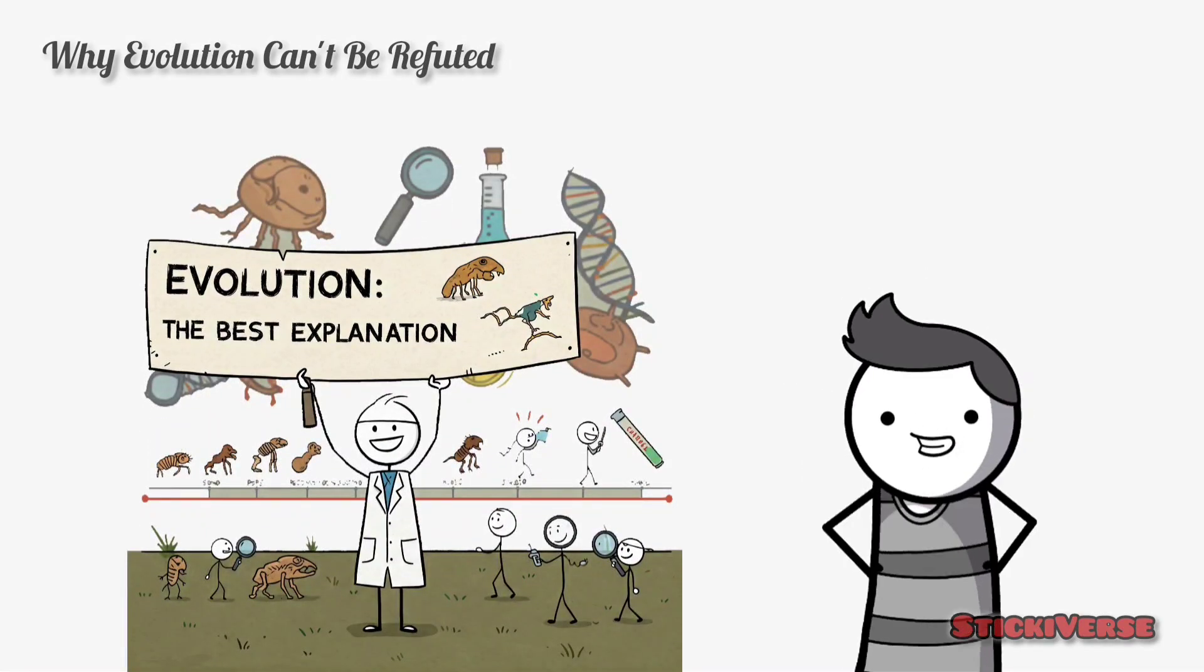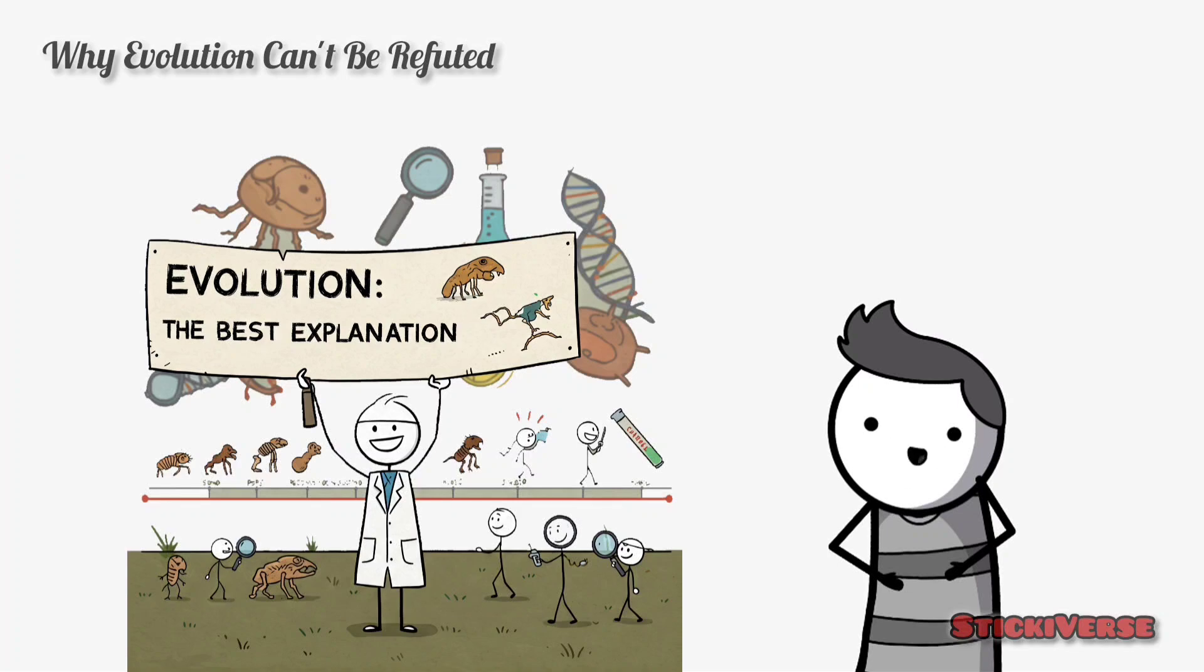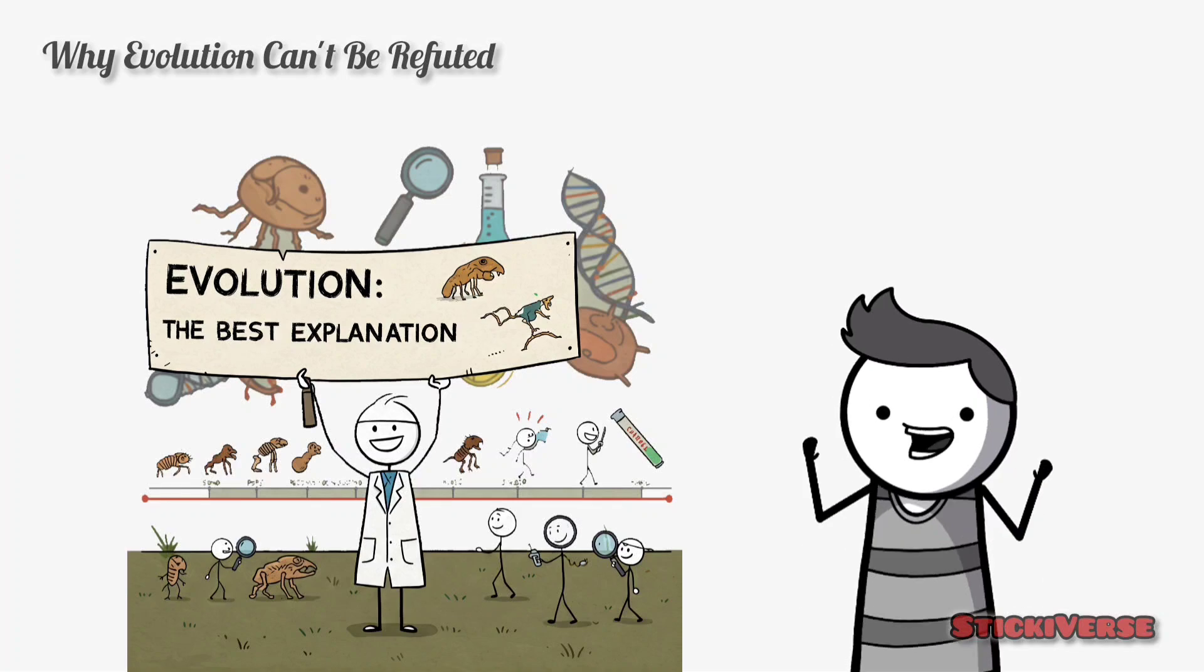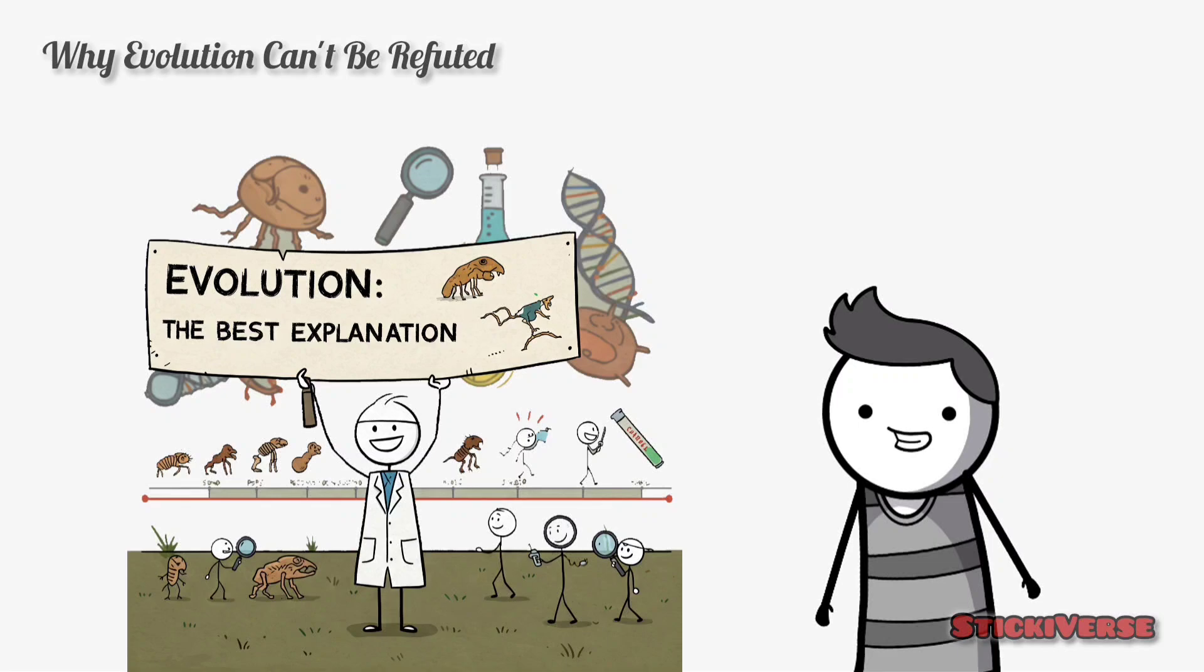In short, evolution can't be refuted because it's not just a theory, it's the best scientific explanation for the diversity of life on Earth, constantly supported by new findings and observations.